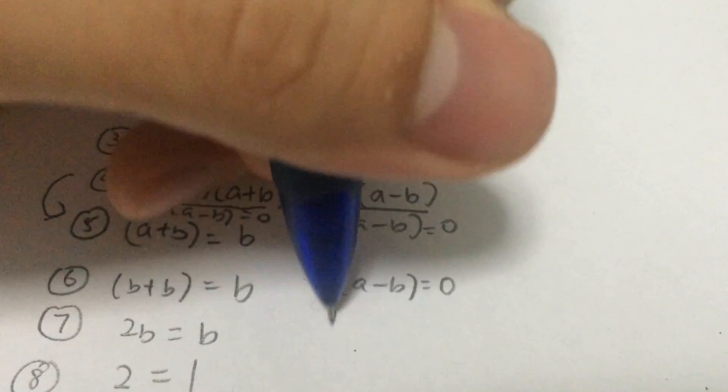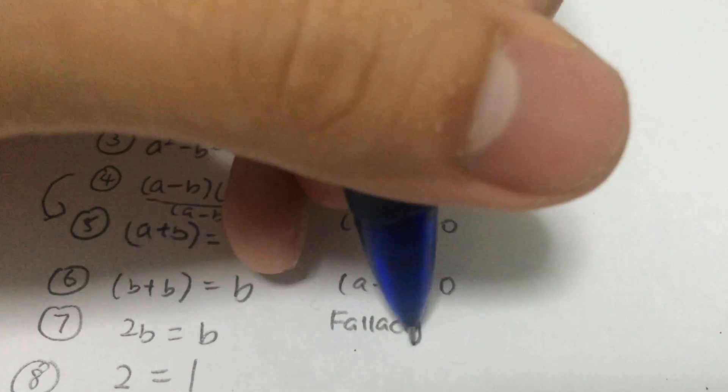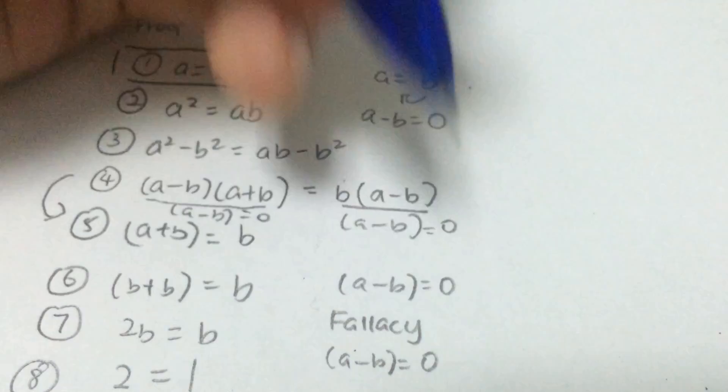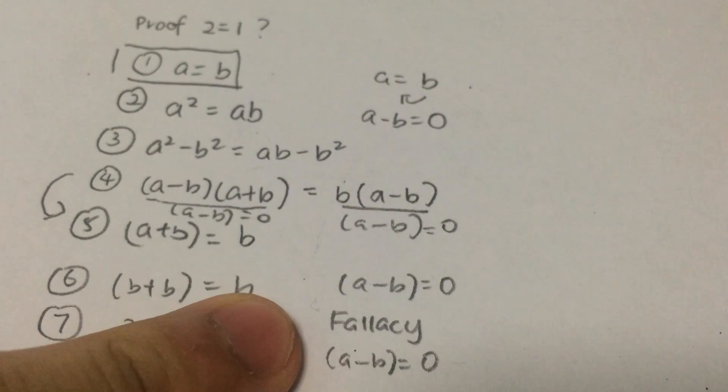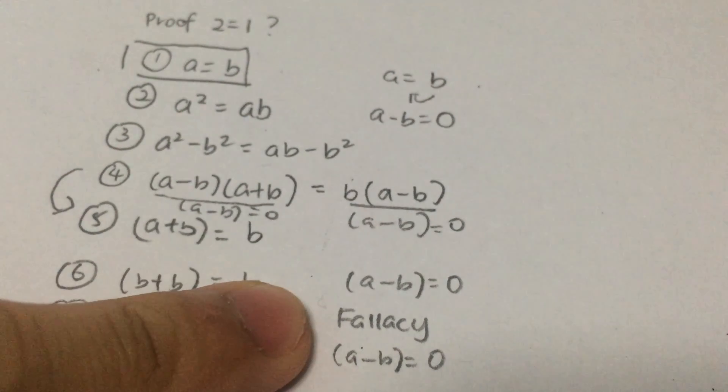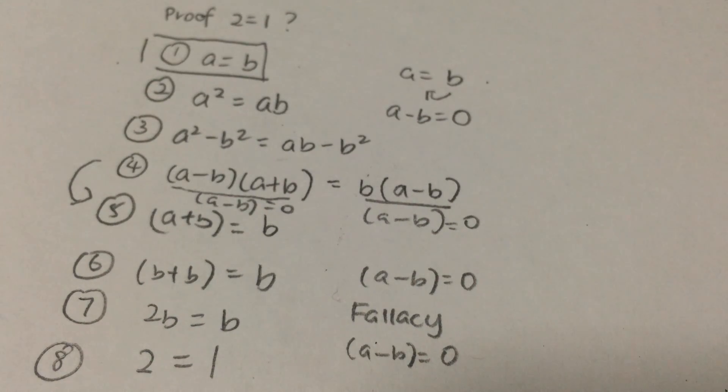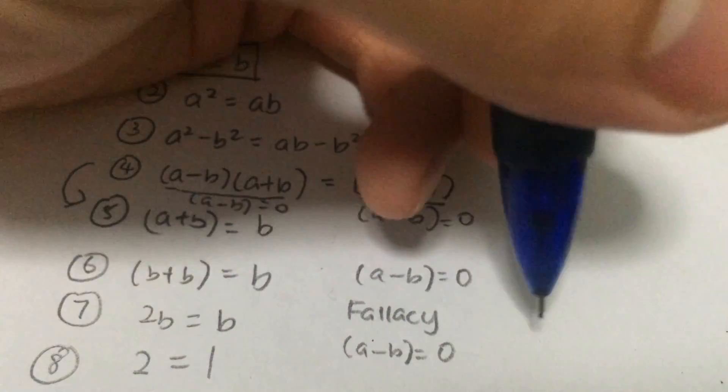And here, this is actually a fallacy because a minus b equals to zero. And this proof has a problem of divisible by zero, or what we call the divisible by zero fallacy.